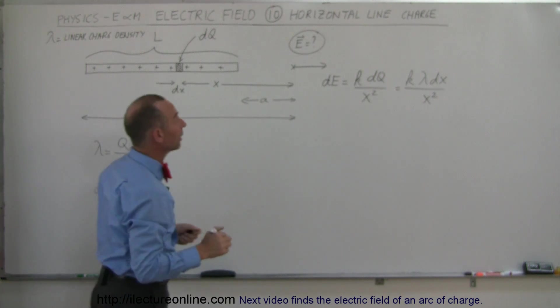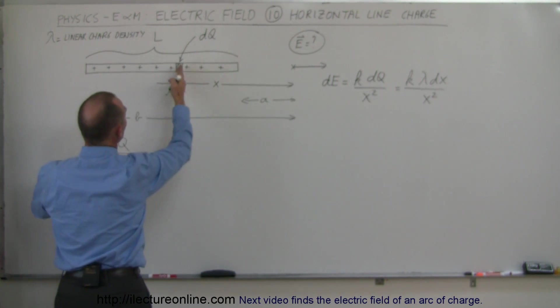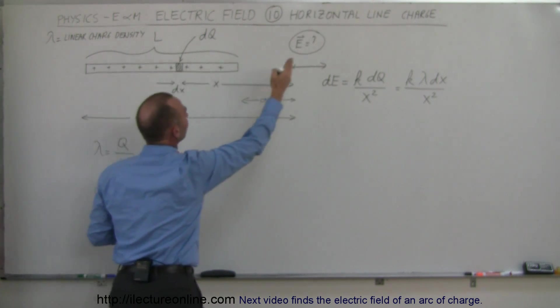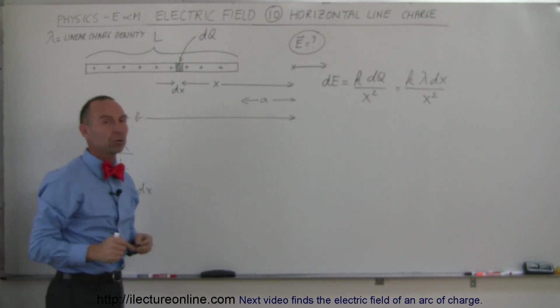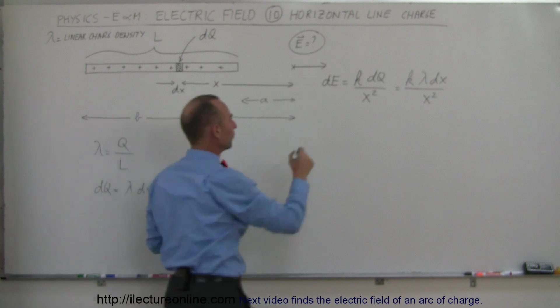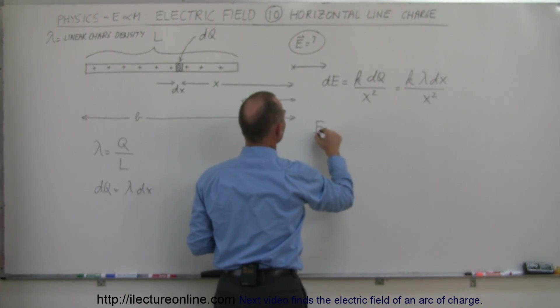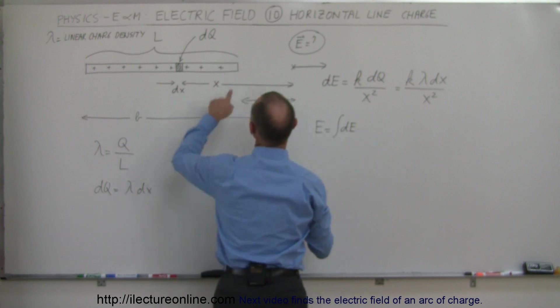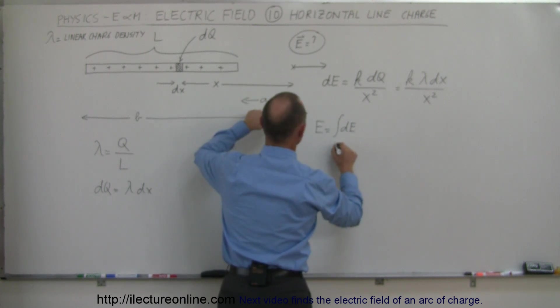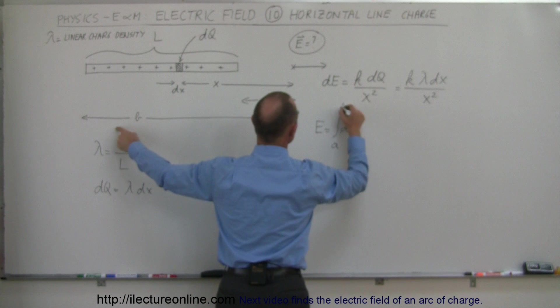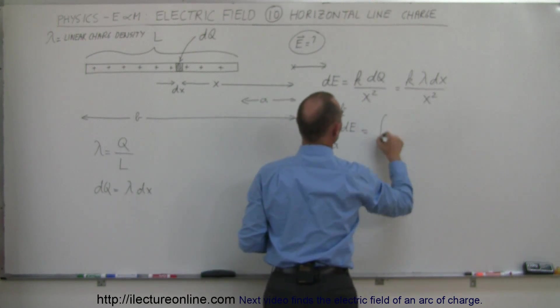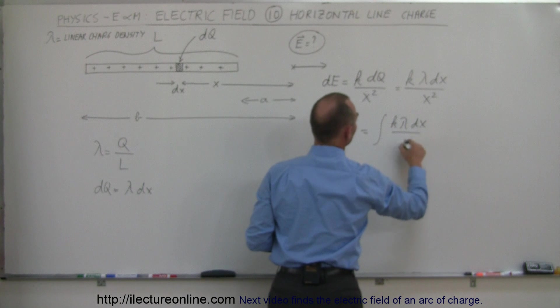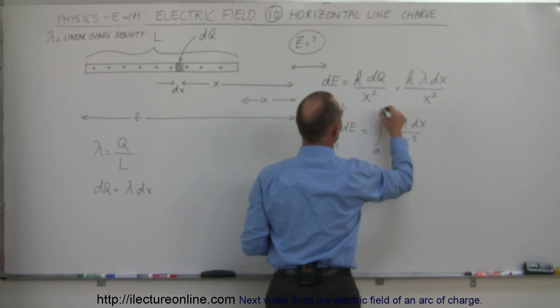And so what we need to do now is we need to then sum up all the small little segments, and when we sum them all up, that will equal to the total electric field at that location. So therefore, the total field, electric field E, is equal to the sum of all the little DEs, integrating from X equal A to X equal B. And so that would be equal to the integral of K lambda DX over X squared from A to B.